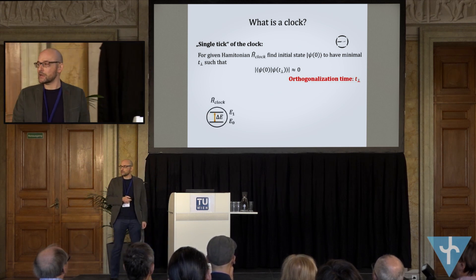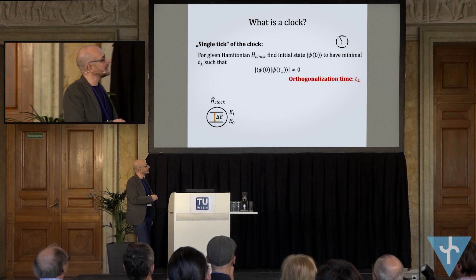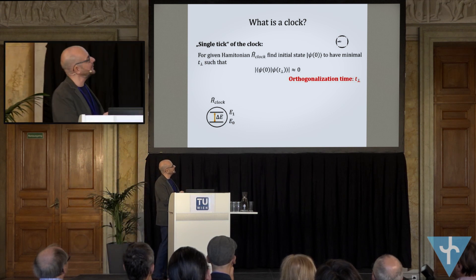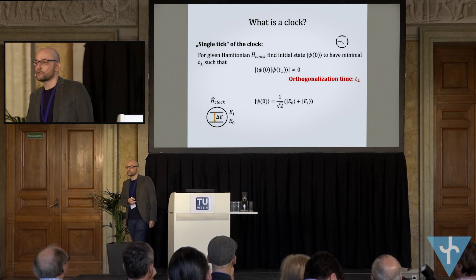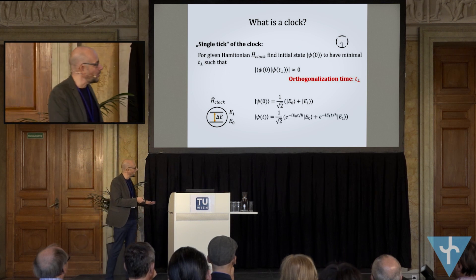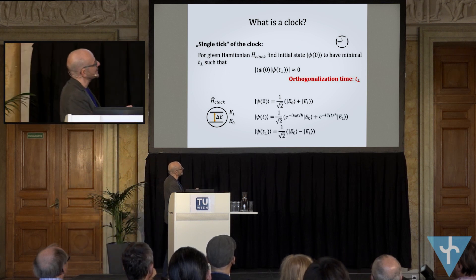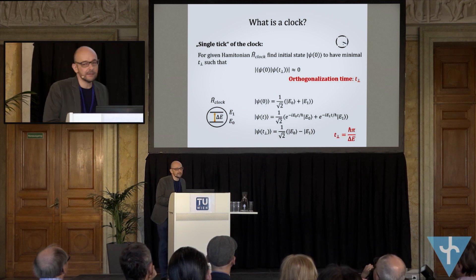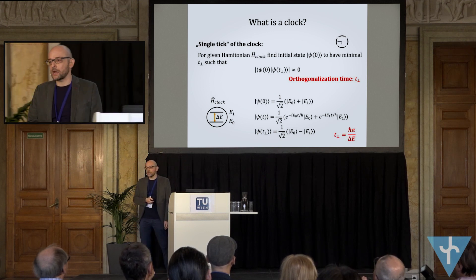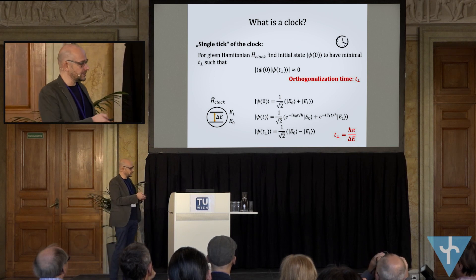The simplest case is a two-level clock. There is an energy gap between energy states of the clock. I start with a superposition of energy states, let it evolve, and after the orthogonalization time I get to the orthogonal state. In that case, the orthogonalization time is inversely proportional to the energy gap between the energy states.